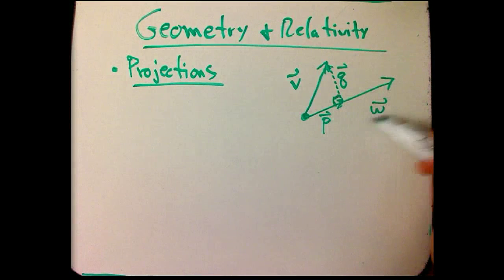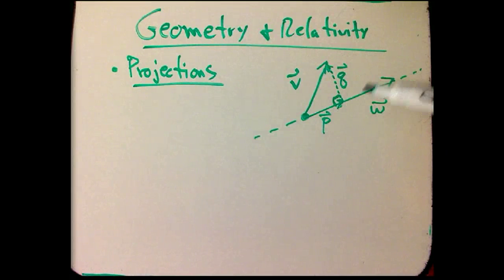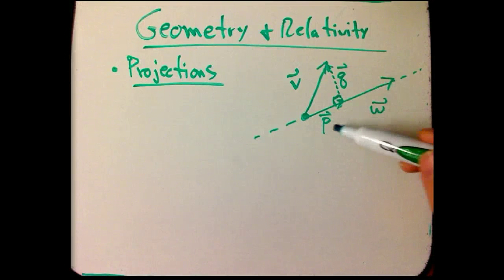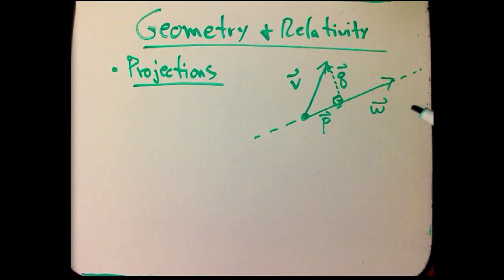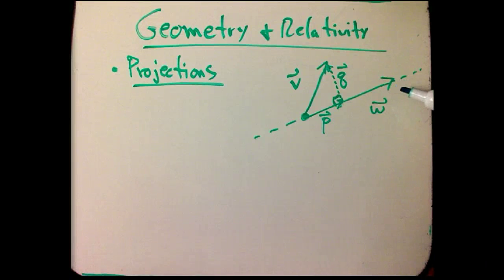One thing that's important is that the role of W here is just to define this line that we're projecting V onto. And so it's just the line that's important. In particular, we should get formulas so that if we double W or triple it or scale it in any way, it shouldn't affect the final answer for, for example, the vector P or Q or the length of P or the length of Q.